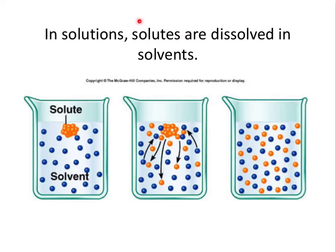There are two key words here: solutes and solvents, and they're pretty easy to tell apart. Solutes are dissolved in solvents. For example, these little orange molecules are the solute, and the blue molecules are the solvent. Over time, you can see the solute molecules diffusing — spreading out down their concentration gradient — while the solvent molecules diffuse up towards where they're less concentrated, until eventually you've got a beaker full of molecules at equilibrium, evenly spread out.